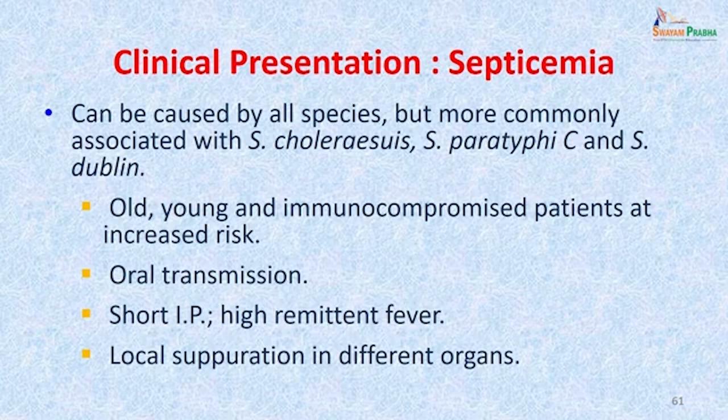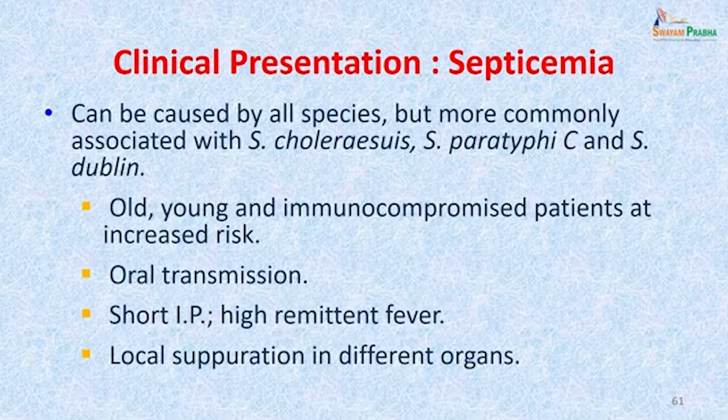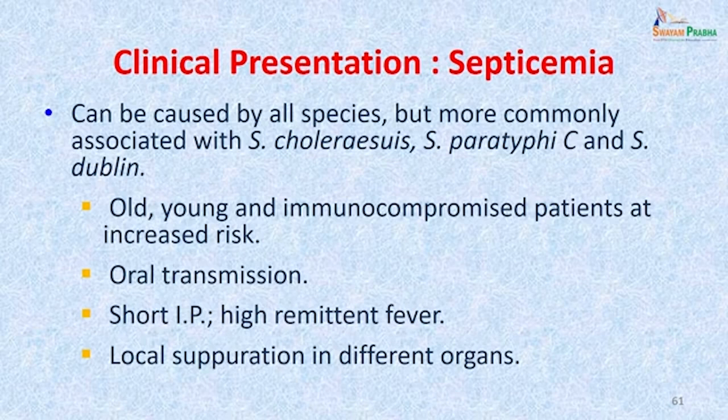Salmonellosis can also present directly as septicemia, more commonly seen with animal pathogens specifically Salmonella Choleraesuis, Salmonella Paratyphi C, and Salmonella Dublin. Extremes of age and immunocompromised patients are at increased risk. Transmission is by the oral route, with a very short incubation period, high remittent fever from onset, and eventual local suppuration with pyogenic lesions at multiple organ sites.